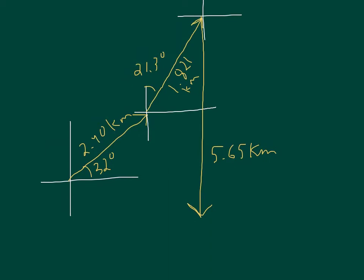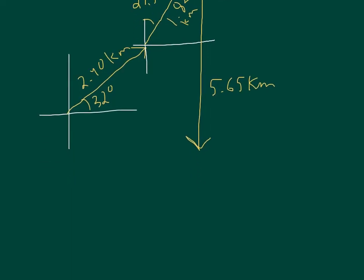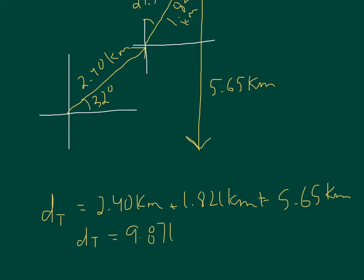Two questions asked are, what is the total distance we travel? Total distance is just simply this vector, 2.4 plus 1.821 plus 5.65. It's the easiest of the calculations to do, so we'll just start with that. So DT, total distance, 2.40 kilometers plus 1.821 kilometers plus 5.65 kilometers. So we just add them up and we get 9.87 kilometers, so that's the total distance that we travel.